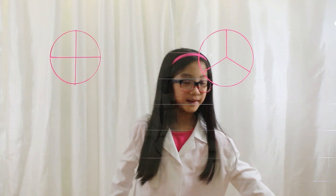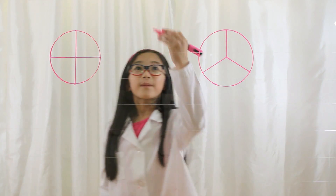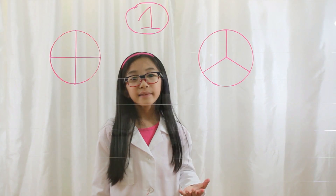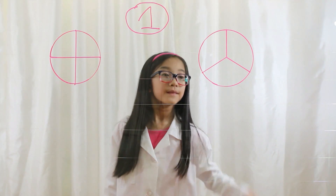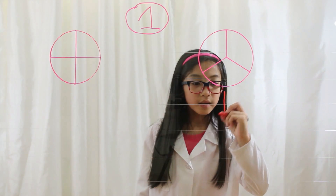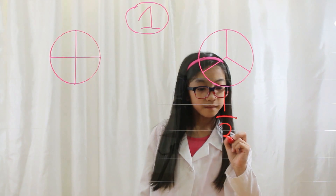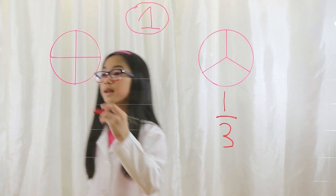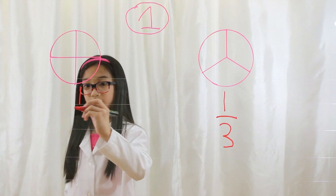Okay, let's do type one. Remember, type one is where the numerators are the same. I'm going to write down the fractions. This is one-third. This is one-fourth.